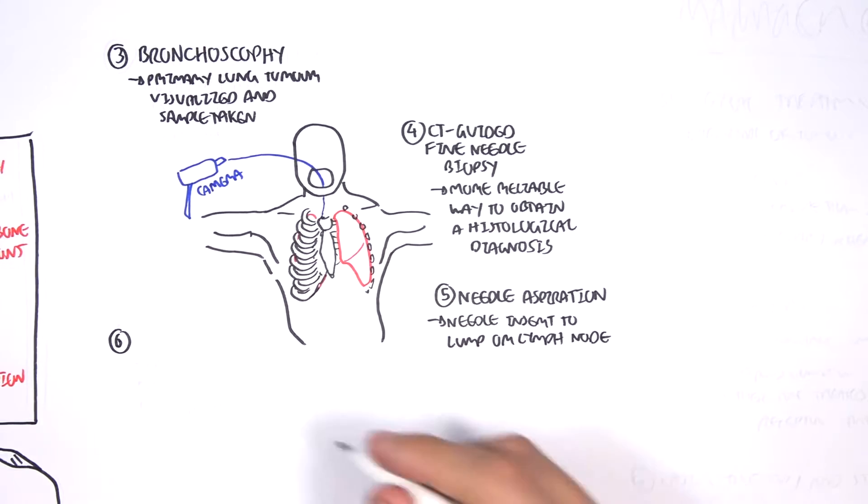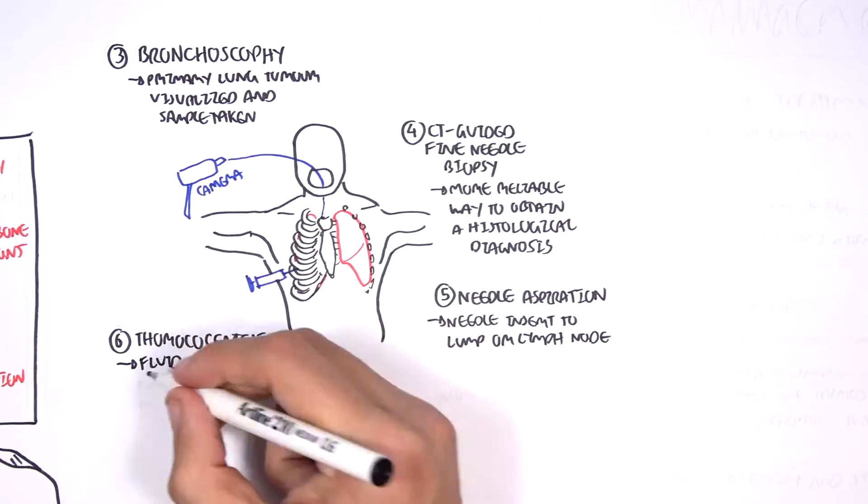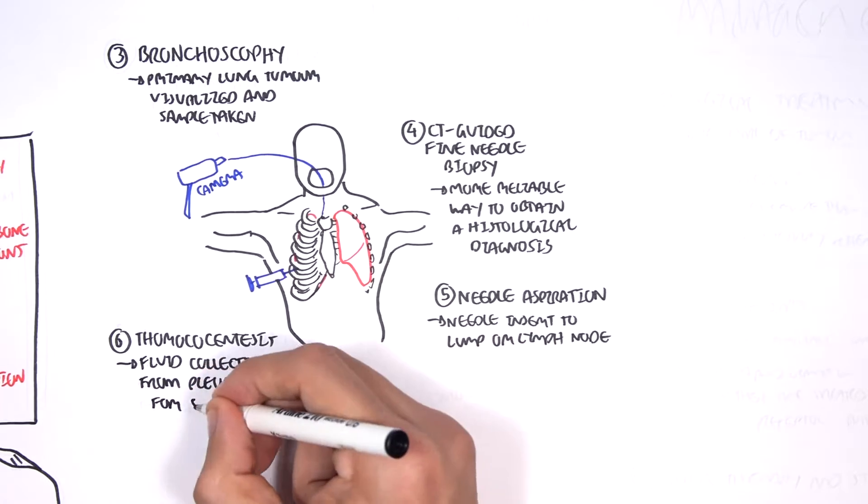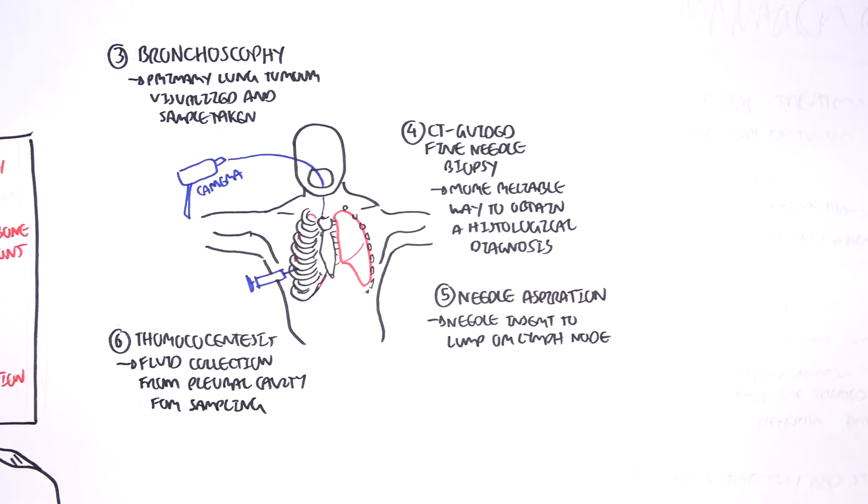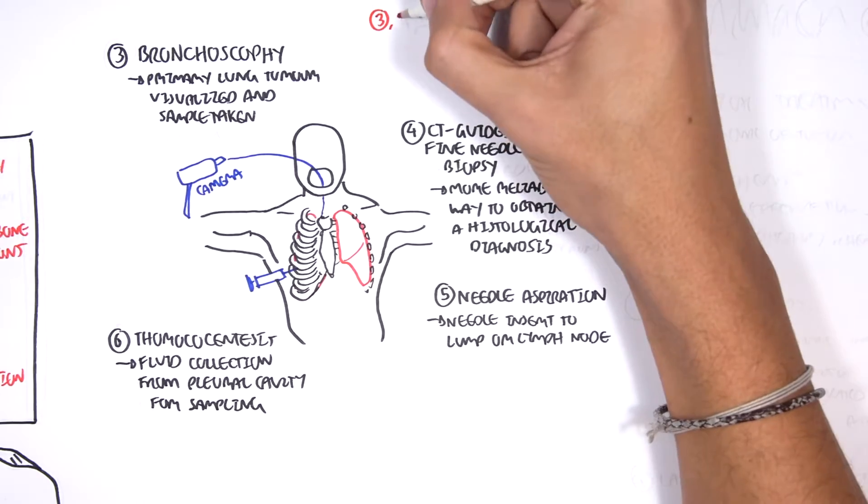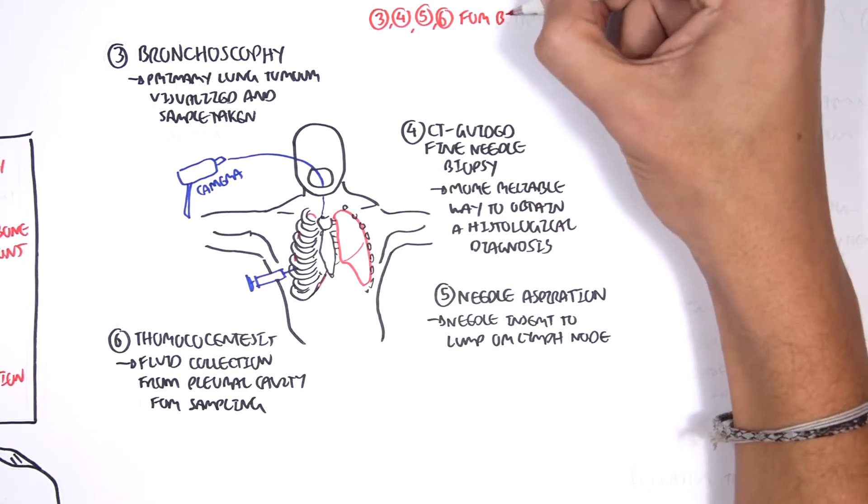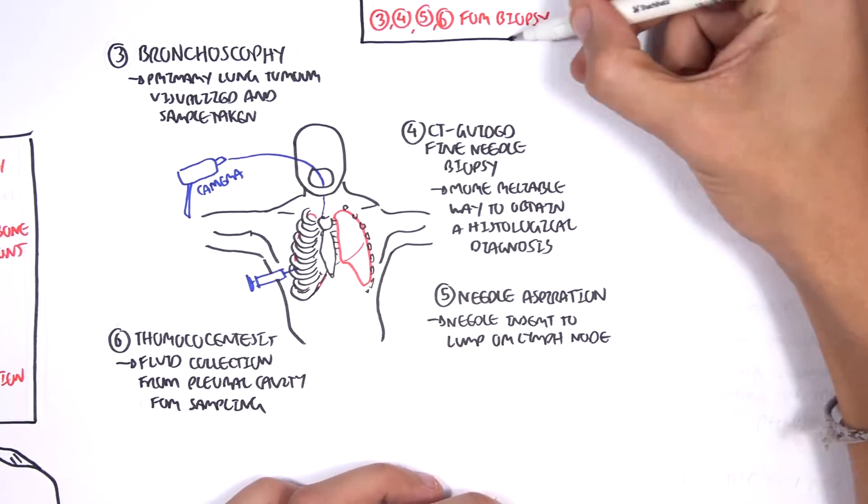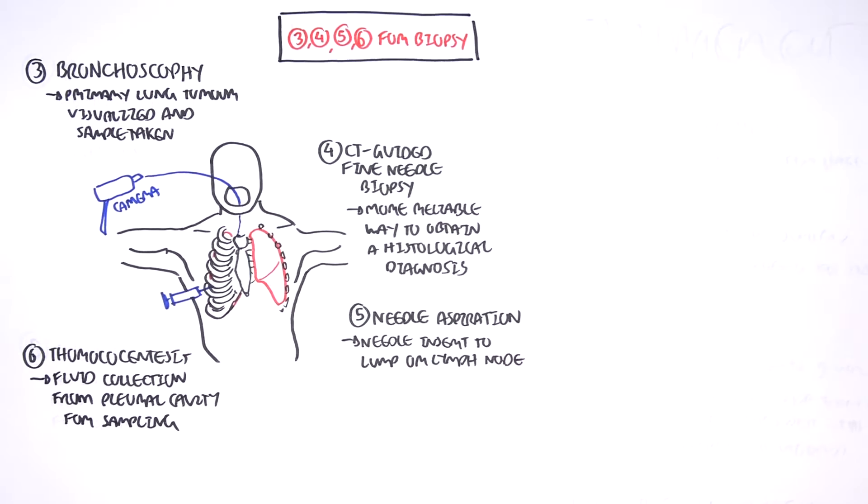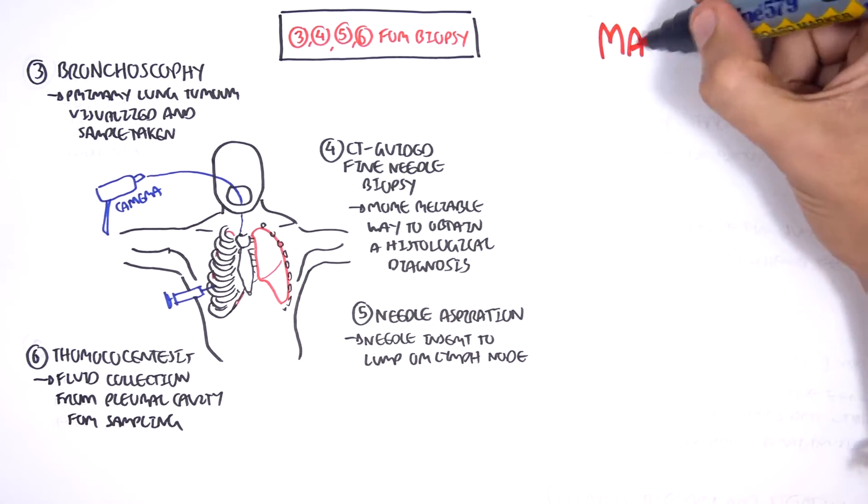Another form of investigation for biopsy is the arthrocentesis, which is where fluid is collected from the pleural cavity and this is used for sampling. Again, these methods are used for biopsy to stage the tumor so that appropriate management can be taken.